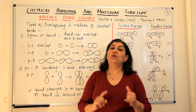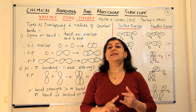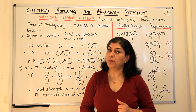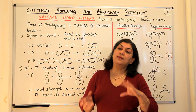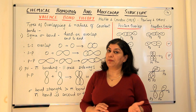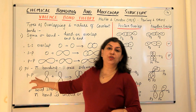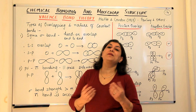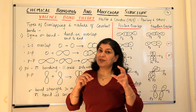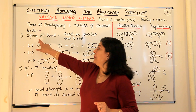The first type of overlap or bonding is known as the sigma overlap or sigma bonding. And the second type of bond formed as a result of overlap of orbitals is the pi bond, or the pi overlap. What is the difference between them? I would like to tell you about it.